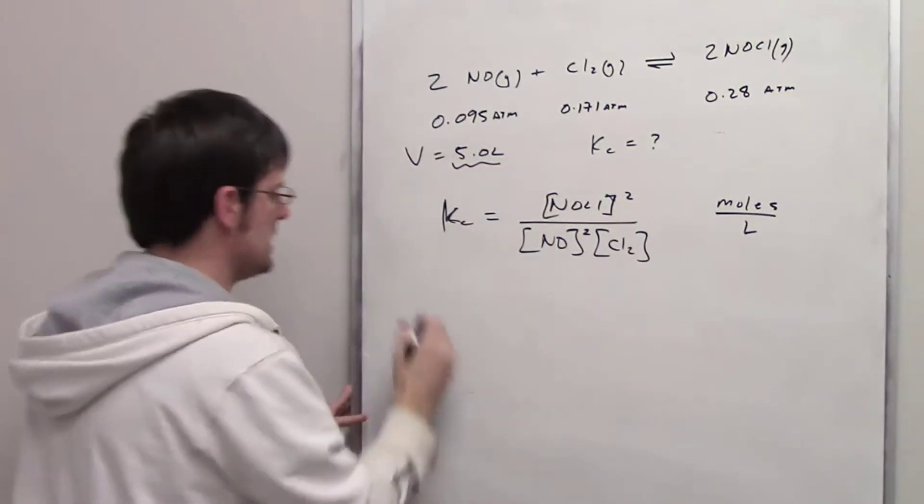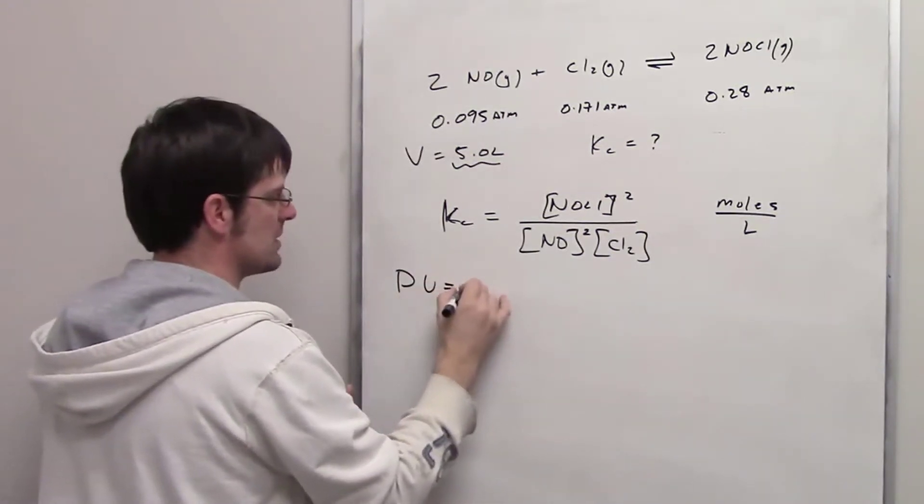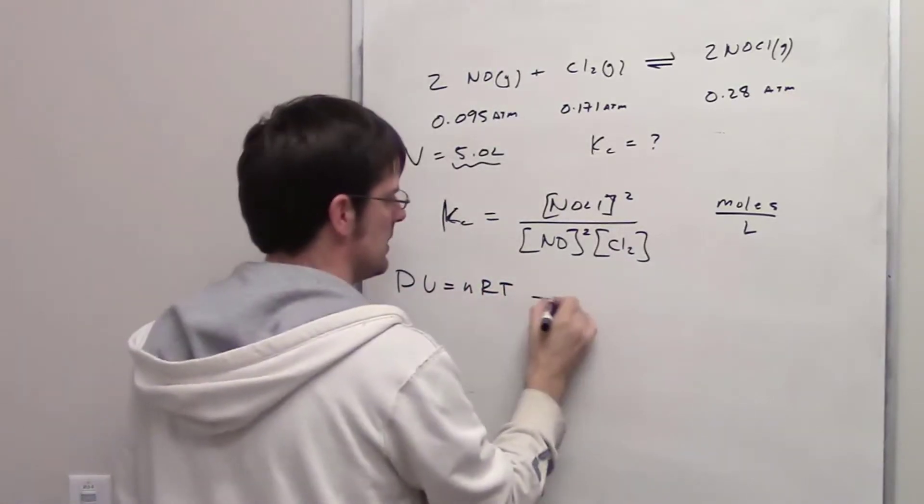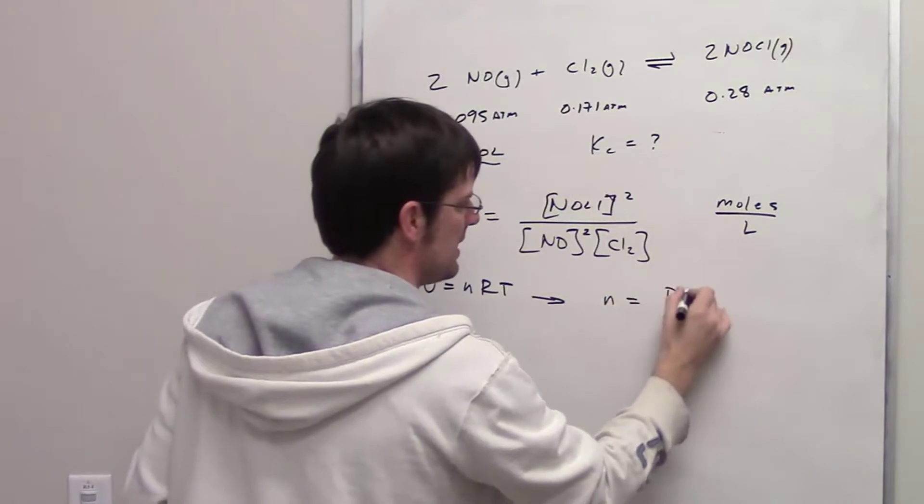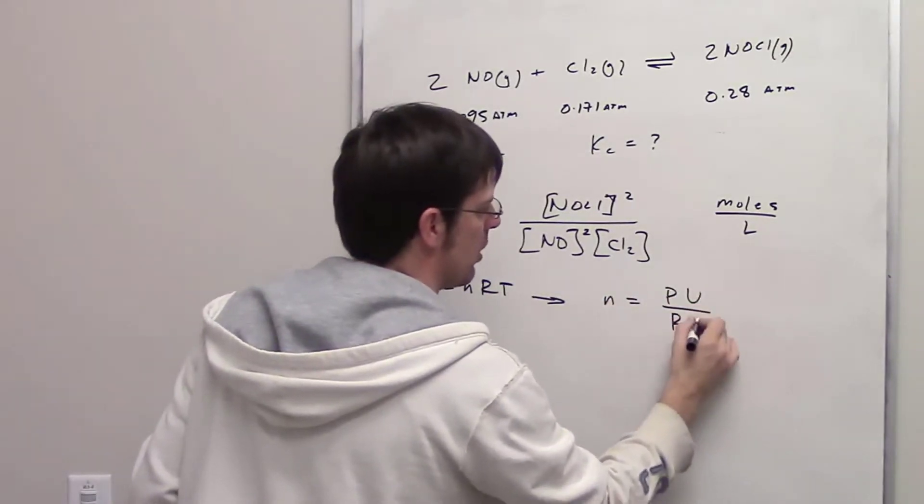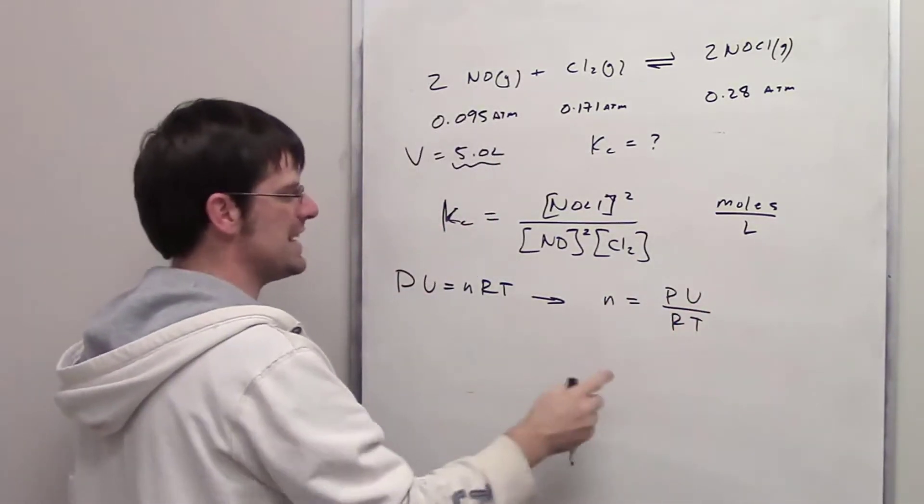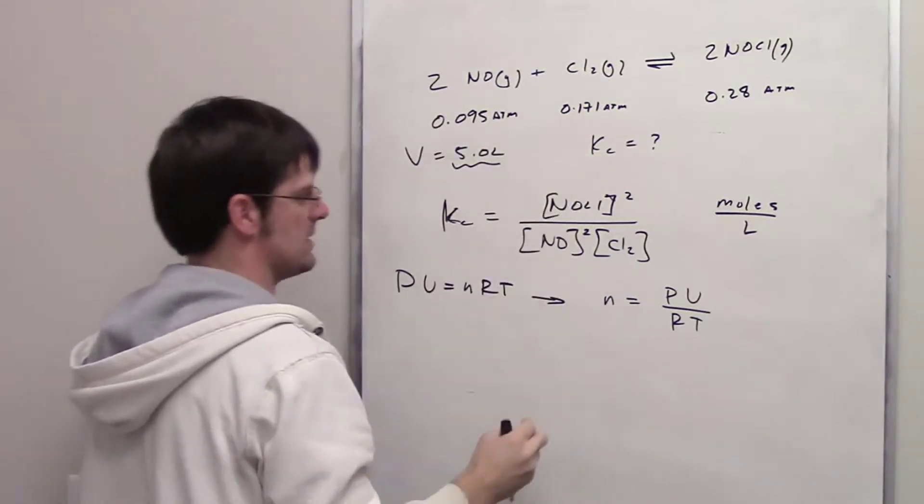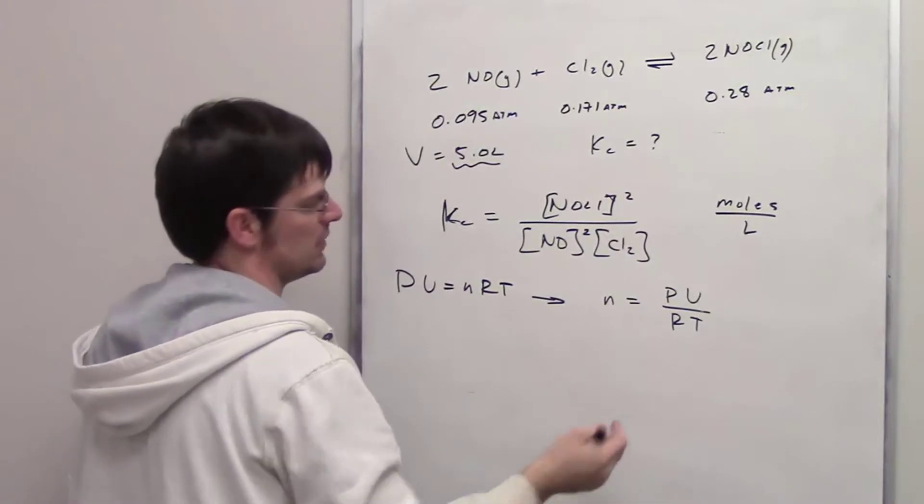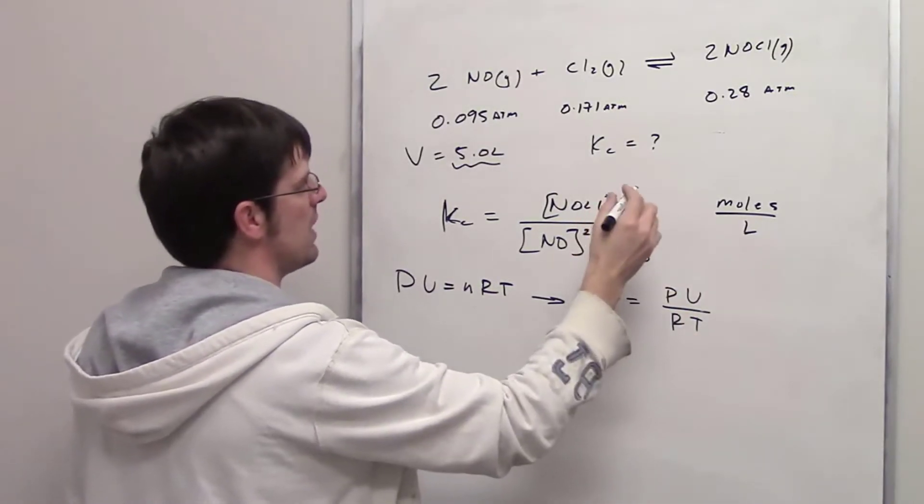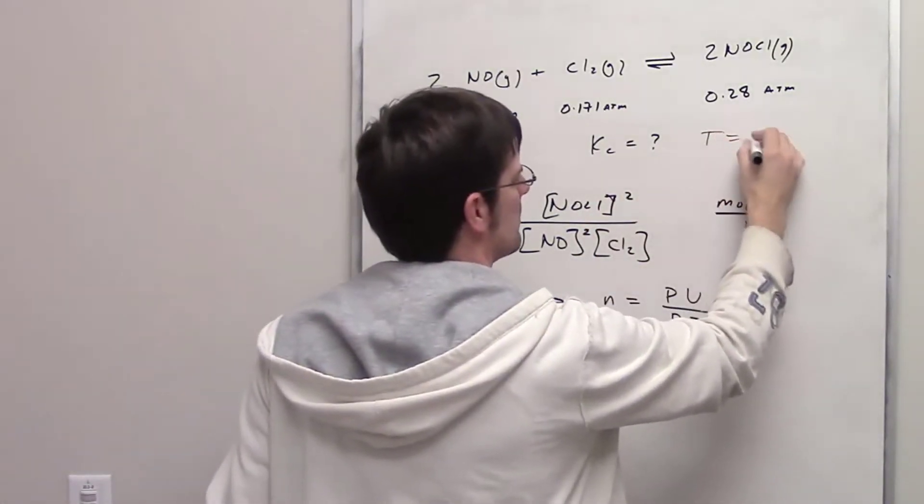Yeah, we're going to use the ideal gas law. Remember, the ideal gas law says PV equals nRT. If you rearrange that, you're going to get n on one side, that's the number of moles, equals PV divided by RT. I can do that for each individual one of these gases. I have its individual pressure. The volume is 5 liters. R is the ideal gas constant. I know the temperature is 500 Kelvin. I neglected to write that. My apologies.